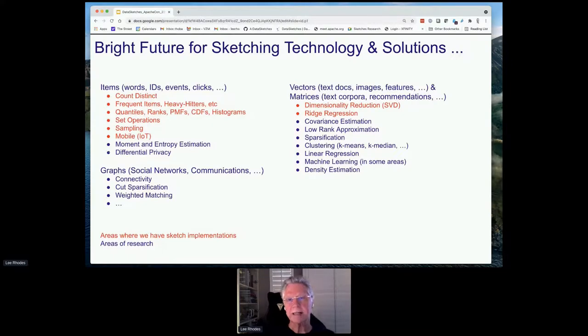There's a bright future for sketching technology and solutions. What's shown here in this chart is basically three major areas: Items were words, IDs, events, clicks, and then graphs, which is another area of research and sketching, and vectors, text documents, images, features. What's in red is areas that we already have sketch implementations. You can see there's a lot of areas of research that we don't have implementations yet, but we hope to as we grow.